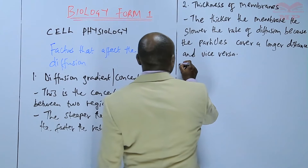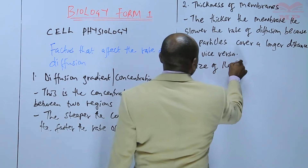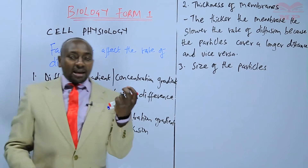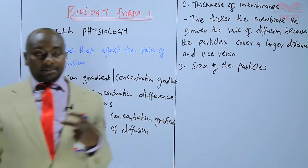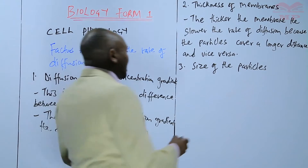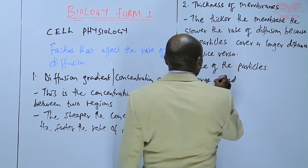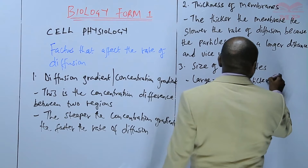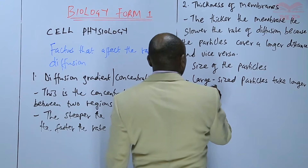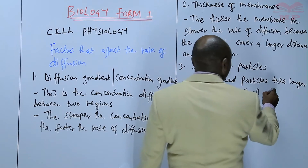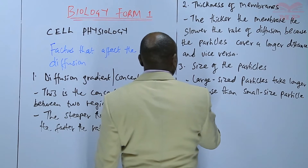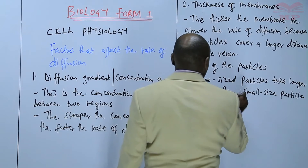The third factor is the size of the particles. If the particles are very heavy and very big, they tend to move slowly. And if the particles are small and light, then they tend to diffuse faster. So large-sized particles take longer to diffuse than small-sized particles, due to their density or due to the weight of the particles.